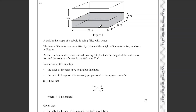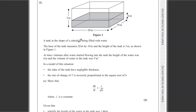The question gives a diagram of a cuboid modelling a tank being filled with water. The base measures 20 by 10 metres and the height is 5 metres. At time t minutes after water started flowing in, the height of water is h metres and the volume is V metres cubed. The rate of change of V is inversely proportional to the square root of h. Part (a) asks us to show that dh/dt equals λ over √h, where λ is a constant.